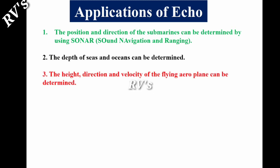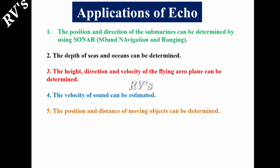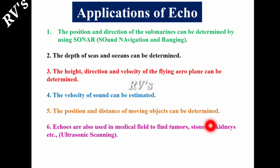Next, height, direction and velocity of flying aeroplanes can be determined. The velocity of sound can be estimated and determined from different mediums. Next, position and distance of moving objects can be determined. And echoes are also used in medical field to find tumors and stones in the kidneys like ultrasound scanning. Echoes are used in the ultrasound scanning system to study the status of fetus in the womb. These are some examples of echo.